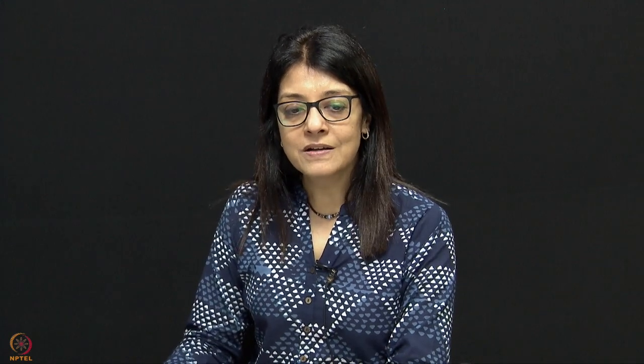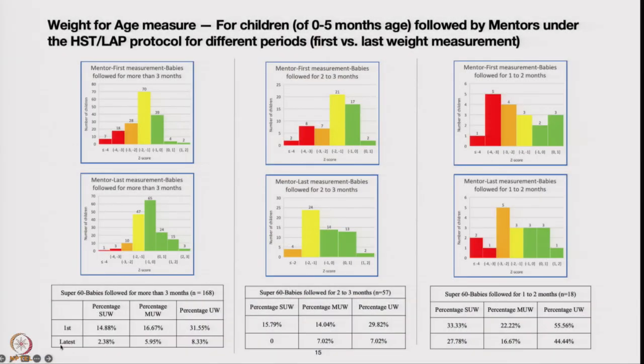Some mentors followed babies for one month, some for two months, and some for more than three months. We wanted to see how babies fared if followed for more than three months using our protocol. Here, 168 babies were adopted at the time of birth, and at birth the low birth weight rate was about 31%. But within three months, that 31% reduced to 8% — just by teaching correct breastfeeding techniques.